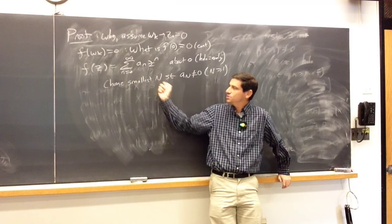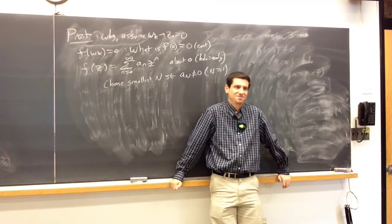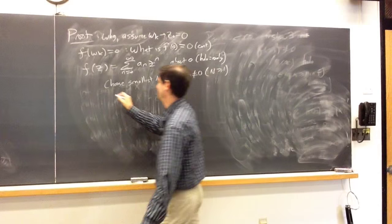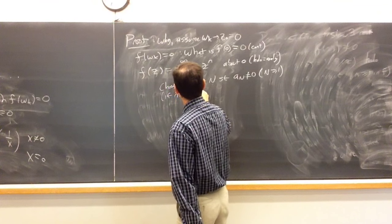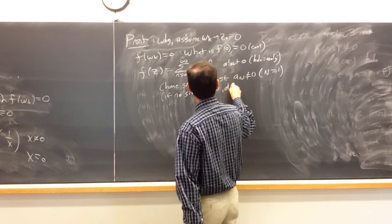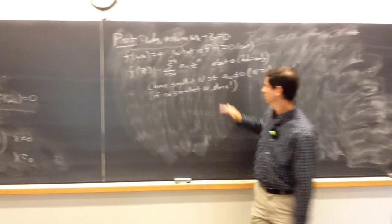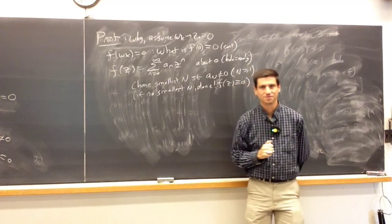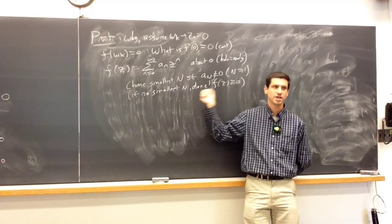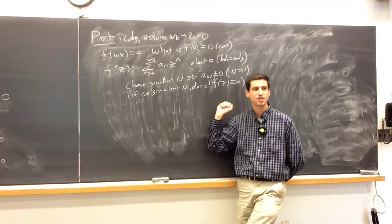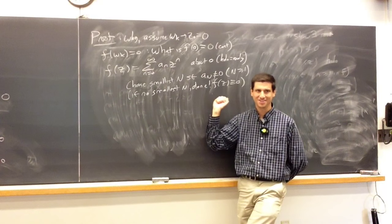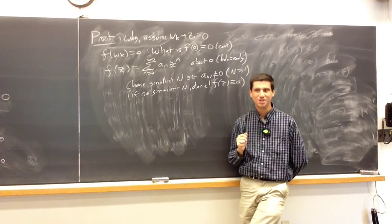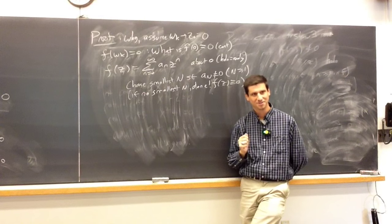Is it possible that there is no smallest n? If there's no smallest n, we're done — then f of z is identically 0, since every coefficient is 0. You just have to make sure you cover all the cases. So now we can write f of z as a_n z to the n times 1 plus g of z, where g of 0 is 0 because the smallest index in g is n plus 1, carrying a factor of z.